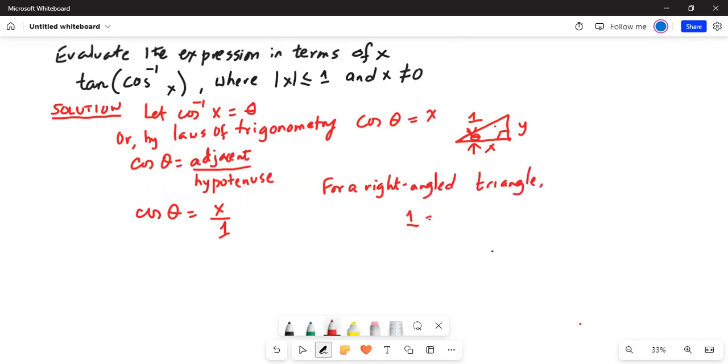1 is equal to y square plus x square. Or if I subtract x square on both sides, I get y square is equal to 1 minus x square. Or y is equal to square root of 1 minus x square.